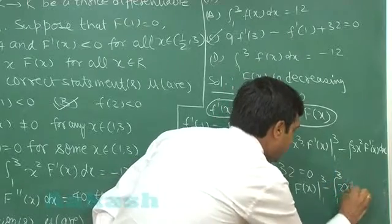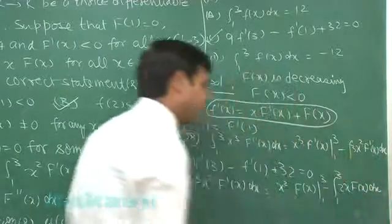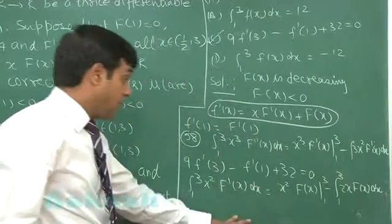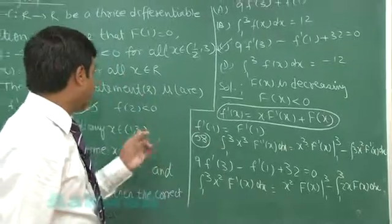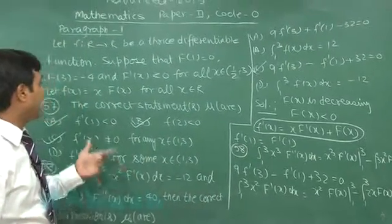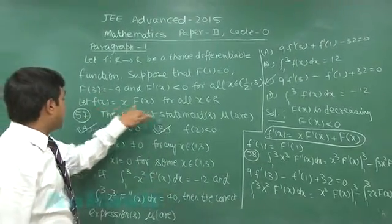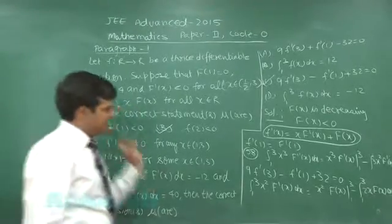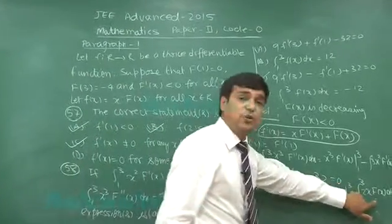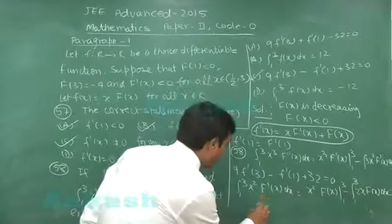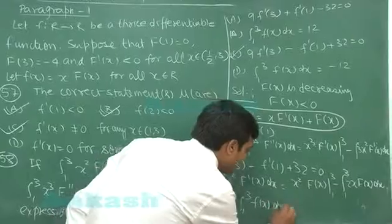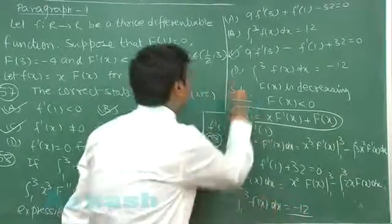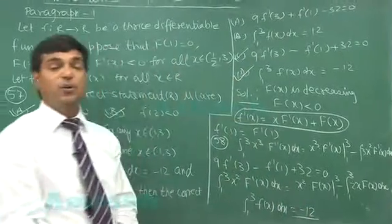This way again we can substitute x F(x) from the given equation as x F(x) equals small f(x). Simply we can put here f(x) to get the required result and that comes integral 1 to 3 f(x) dx is equal to minus 12, that is option D.